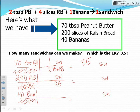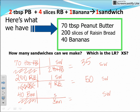For raisin bread: put raisin bread on the bottom and sandwiches on top. One sandwich takes four slices of raisin bread, so: 200 ÷ 4 = 50 sandwiches with all the raisin bread. For bananas: one banana is needed for one sandwich — it's a one-to-one ratio — so 40 bananas gives us 40 sandwiches.